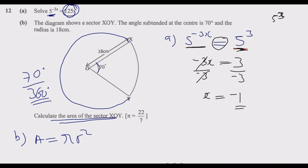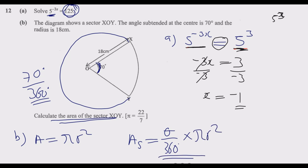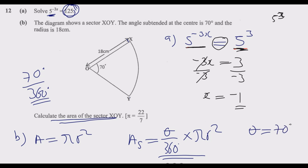This tells me that the area of a sector is given by the angle subtending the sector, which is theta, divided by 360 for the complete circle, then multiplied by the area of the circle. This is the formula for the sector area. We know that theta equals 70 degrees and the radius R is 18 cm. Pi has been given to us as 22 over 7. It's just a matter of substituting these values.